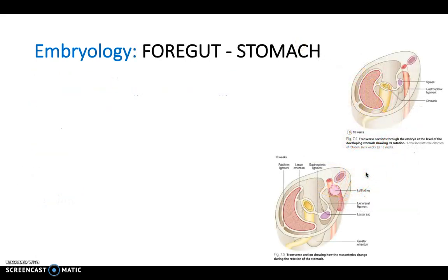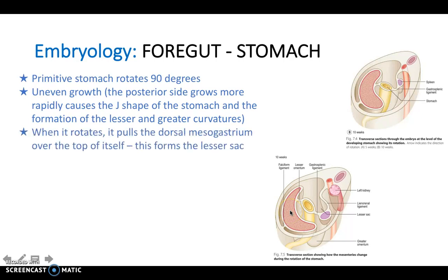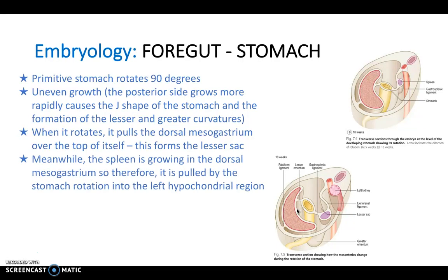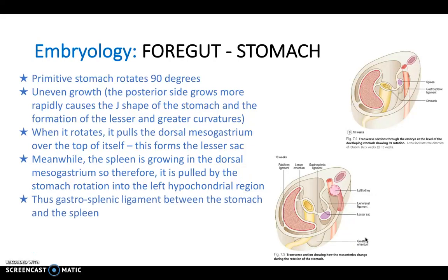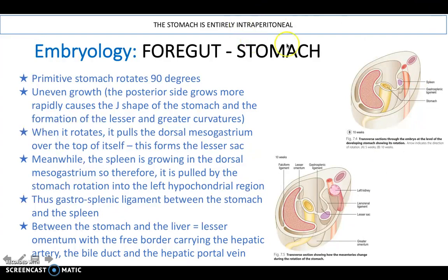Looking at the foregut in more detail, starting with the stomach: the primitive stomach rotates 90 degrees, causing uneven growth where the posterior side grows more than the anterior side, creating the J-shape and the lesser and greater curvatures. The rotation pulls the dorsal mesogastrium over itself, forming the lesser sac, and the spleen growing within the dorsal mesogastrium is pulled into the left hypochondrial region. The gastrosplenic ligament forms between stomach and spleen; the lesser omentum forms between stomach and liver, containing the hepatic artery, bile duct, and hepatic portal vein. Remember the stomach is entirely intraperitoneal.